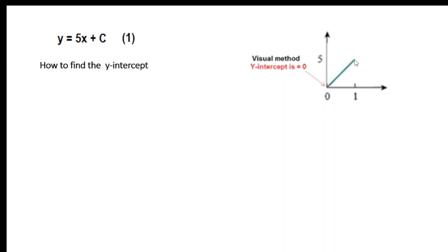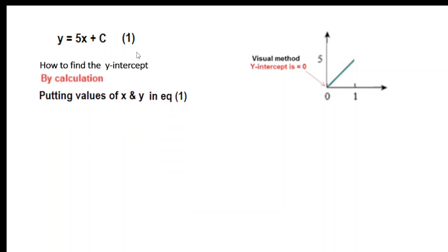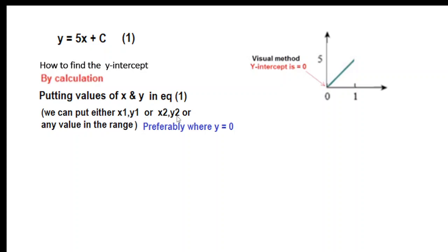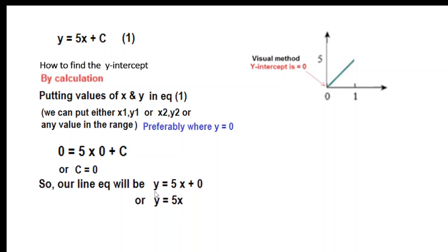In this case we can see the line is touching the y-axis at (0, 0), so the y-intercept is 0, or c = 0. But it is better that we follow the formula so we don't make any mistake. We put the value of x and y into equation 1 — we can use either (x1, y1), (x2, y2), or any point on the line. Putting y = 0 and x = 0, we find c = 0. So our final equation is y = 5x.